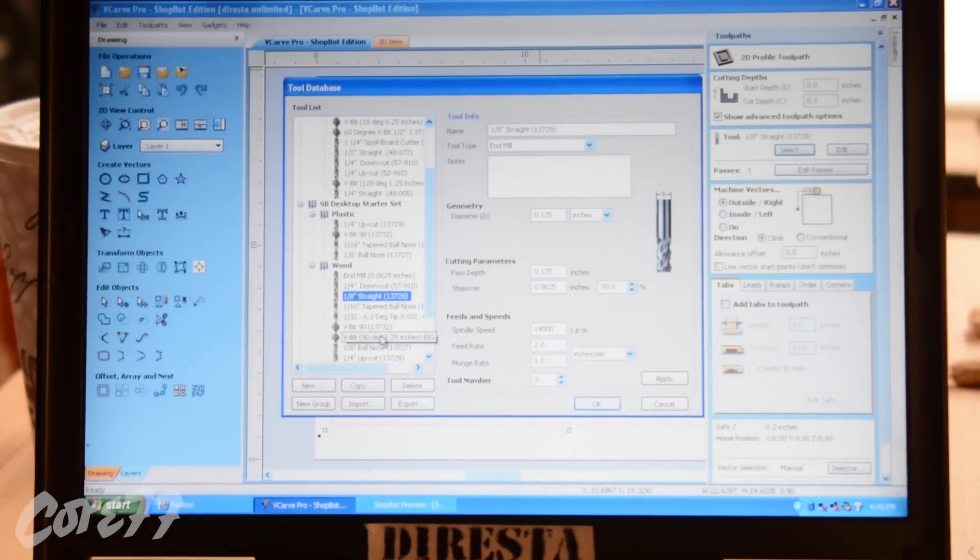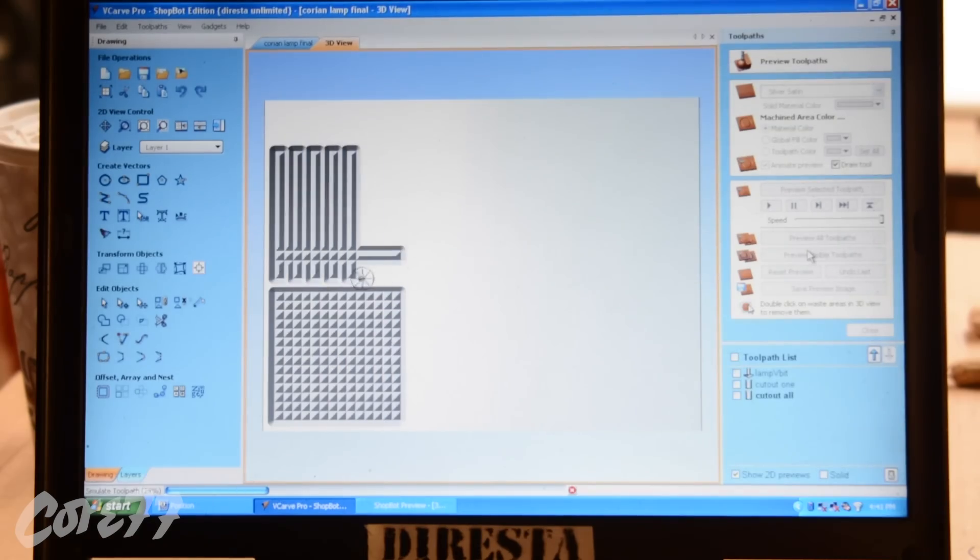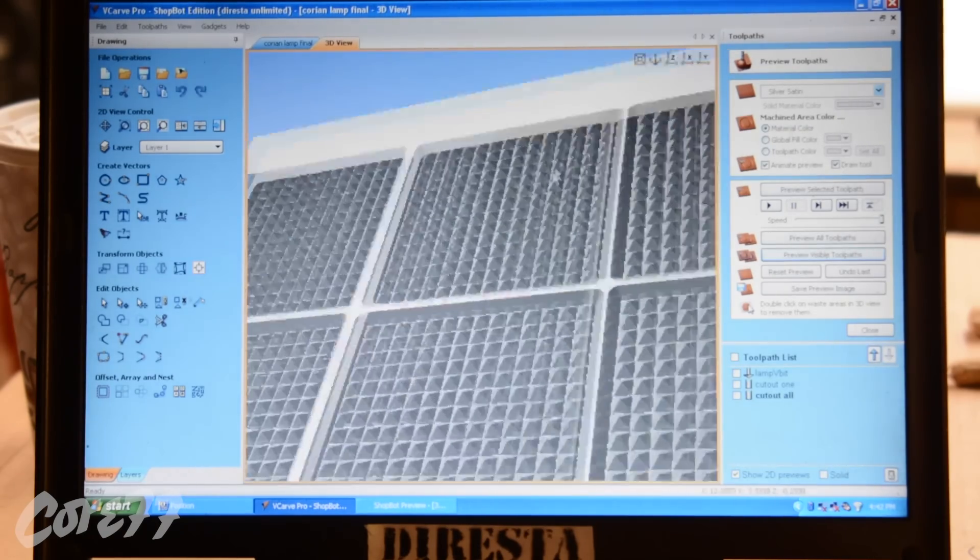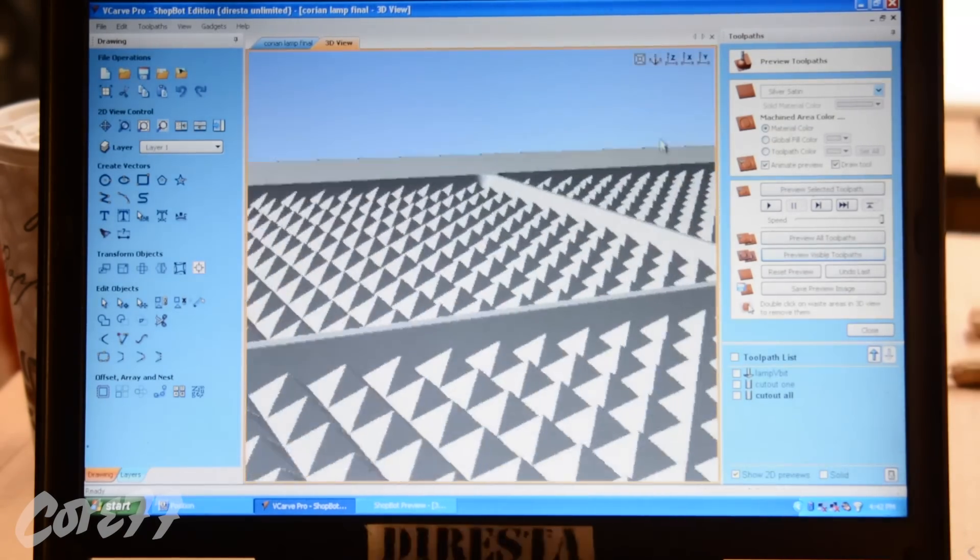My table is 18 by 24 so that's the space I have to cut within. I'm using a V bit, a big V bit, and you see there I'm just running the virtual file just to see what it looks like and I'm happy.